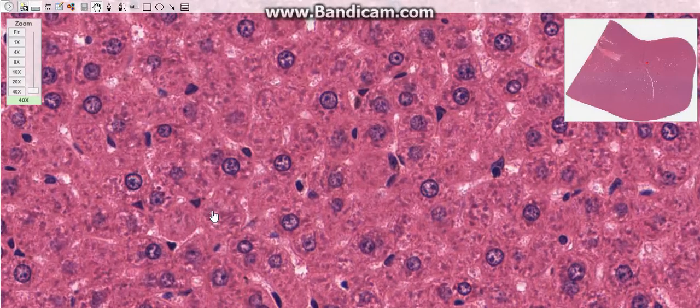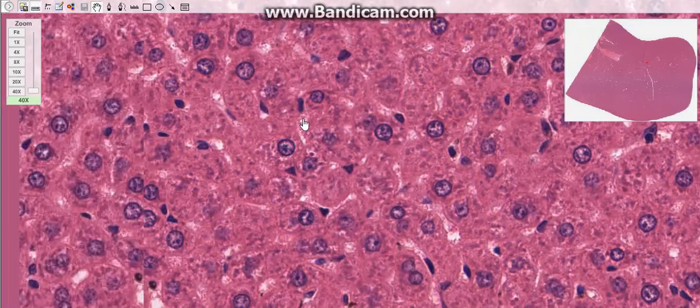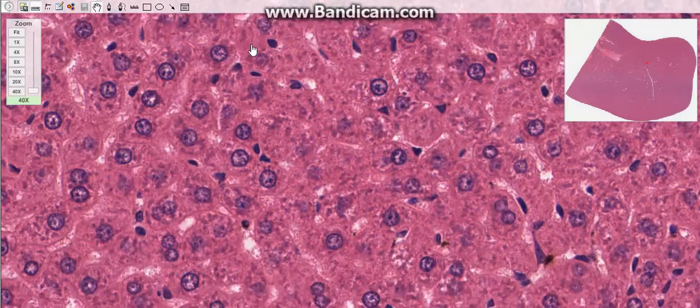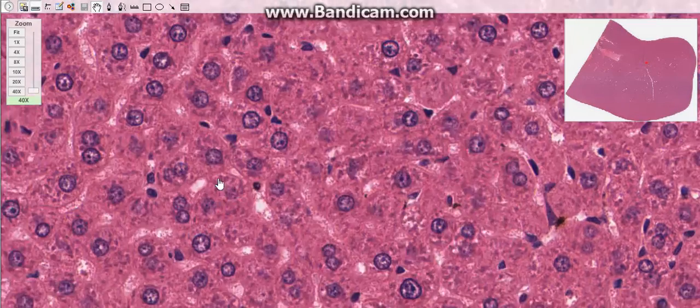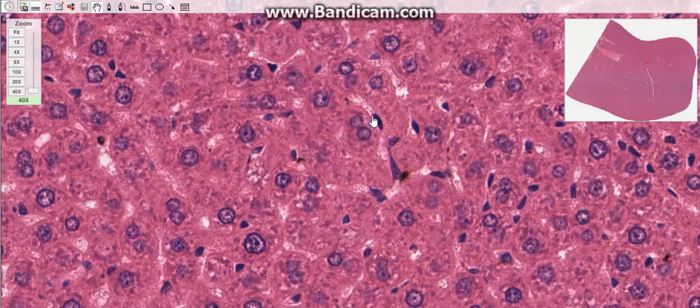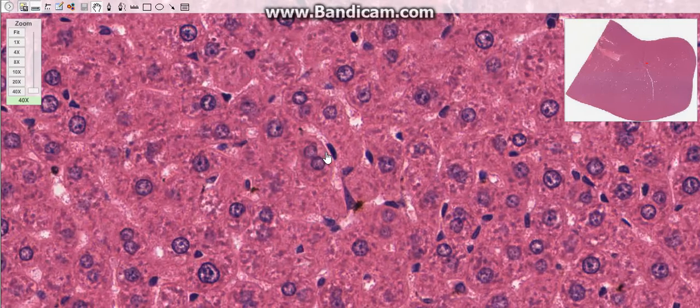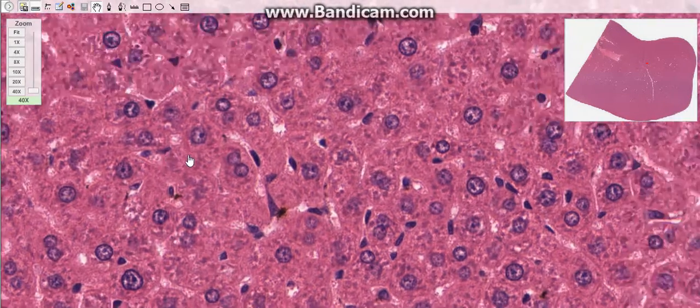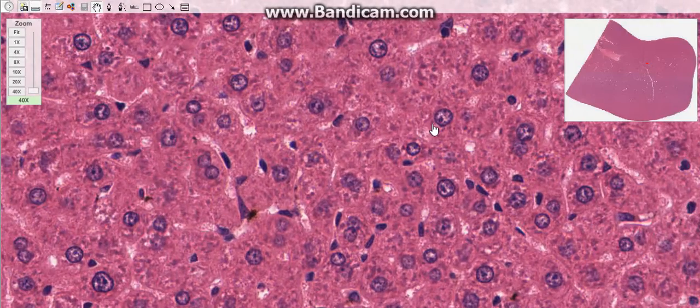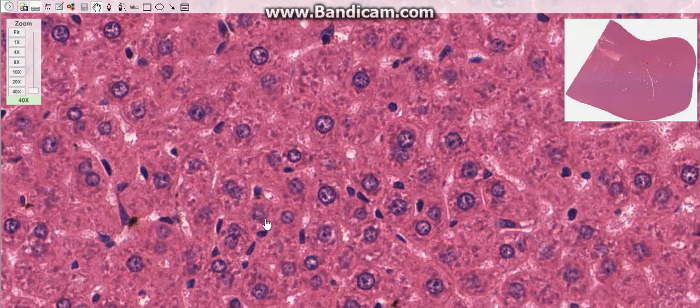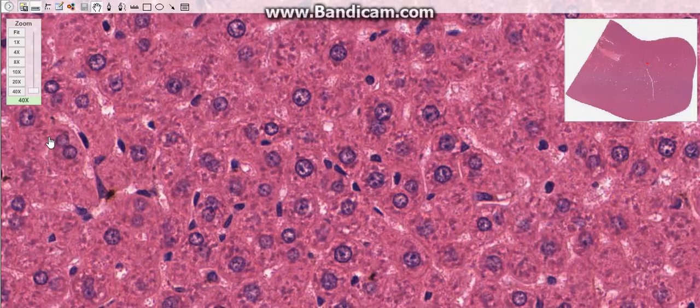The third type of cells are the hepatic stellate cells or Ito cells. They are located in the space of Disse. They have the capacity to accumulate exogenously administered vitamin A. The cell is the major cell type involved in liver fibrosis, which is the formation of scar tissue in response to liver damage.